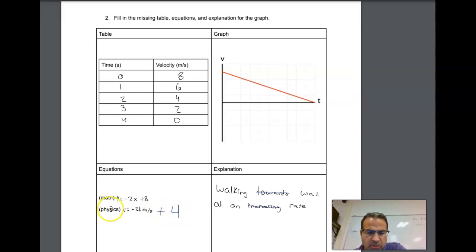I should have written plus 8. Don't forget the physics equation. In this case, it would be v equals negative 2t plus 8, or whatever your y-intercept is. It shouldn't be 8 for everybody's. The explanation is walking away from the wall at a decreasing rate. I hope this helps.